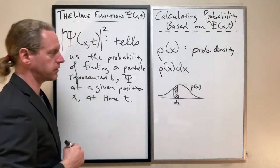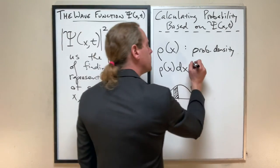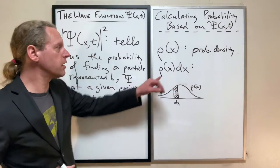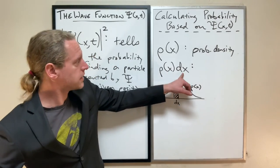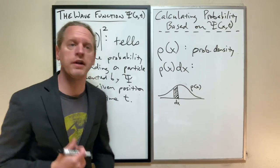that's what the probability is. So this right here is the probability of finding the particle within a width dx of point x.